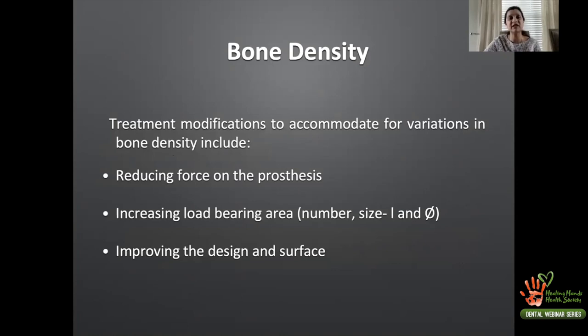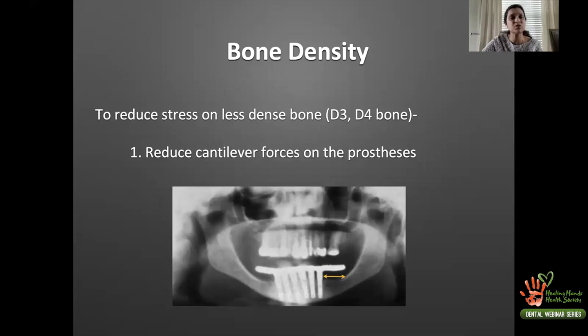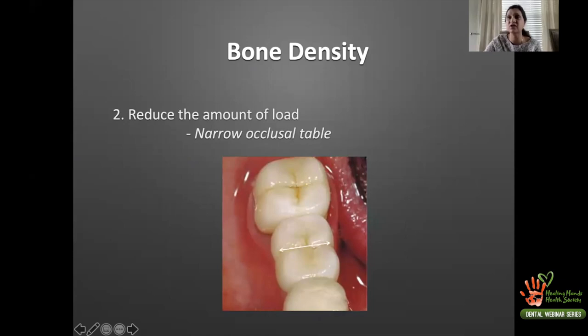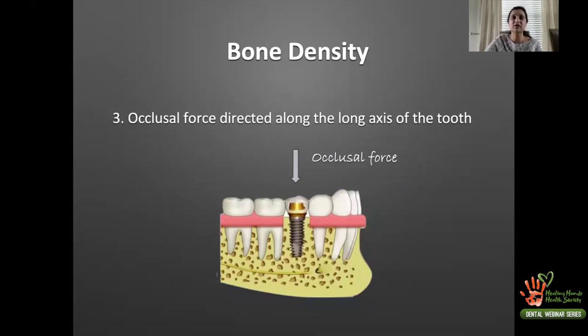To reduce stress on less dense bone such as D3 or D4, reduce cantilever forces on the prosthesis — the longer the cantilever, the greater the stress transferred to the bone. Narrow the occlusal table as per Misch, and direct forces along the long axis of the implant where possible. I take the long-axis loading recommendation with a pinch of salt in the anterior maxilla, where it is not always anatomically achievable — but most authors, including Misch, recommend it.